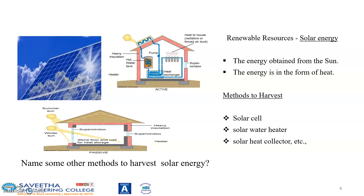A link related to renewable resources has been provided — please have a look at that. The first category of renewable energy is solar energy, which is the energy obtained from the Sun in the form of heat. Methods to harness solar energy include solar cells, solar water heaters, and solar heat collectors.